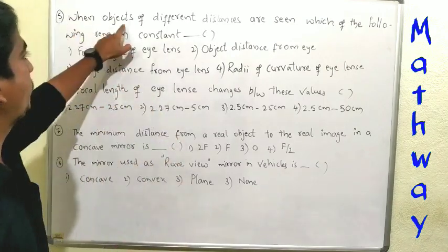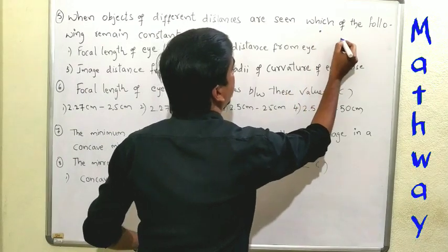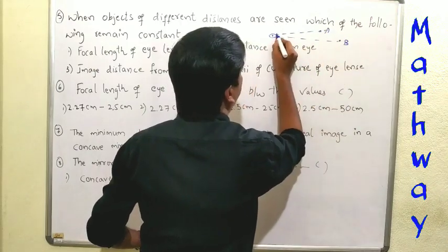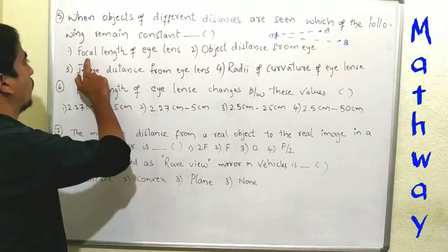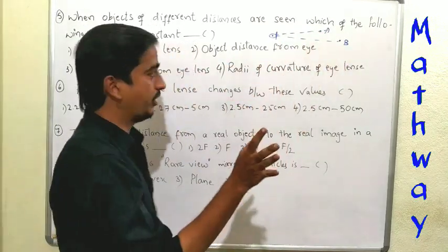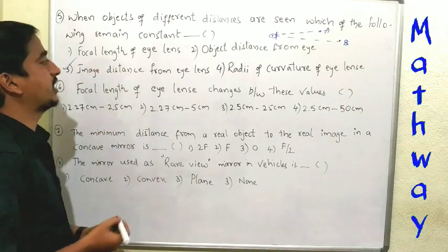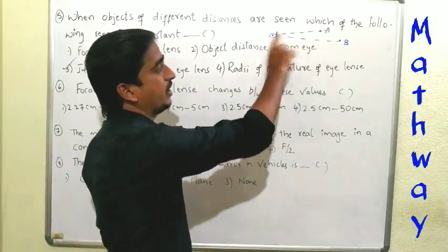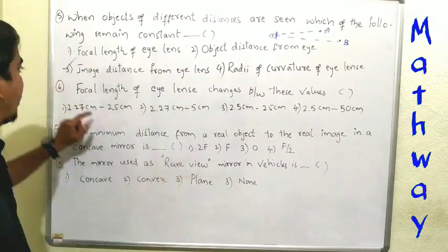Fifth question: when objects of different distances are seen, which of the following remains constant? The radius of curvature of the eye lens changes as the object distance changes. The image distance from the eye lens will never change — that is, it remains constant.